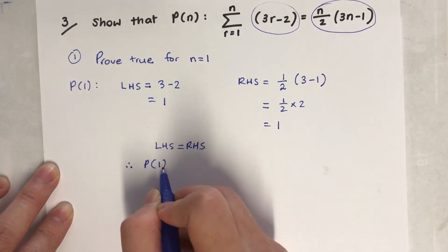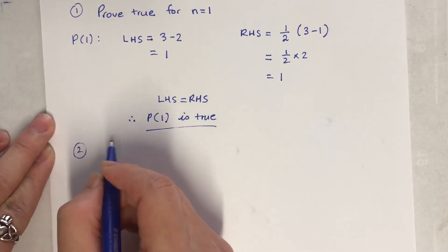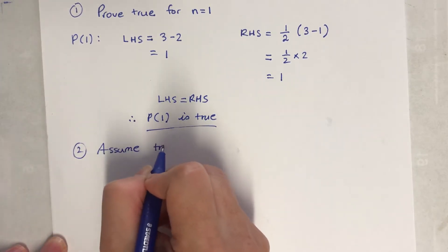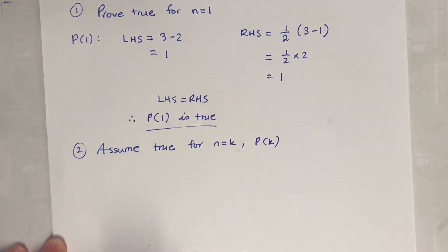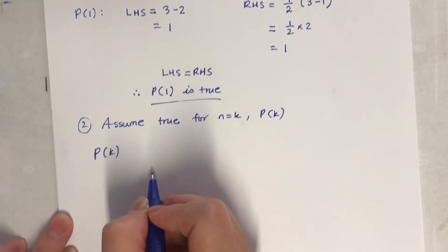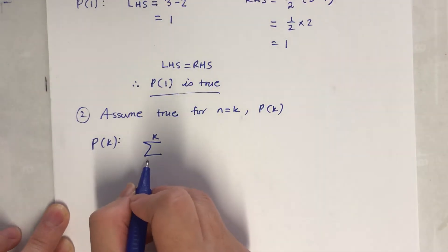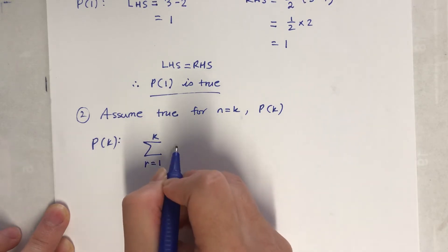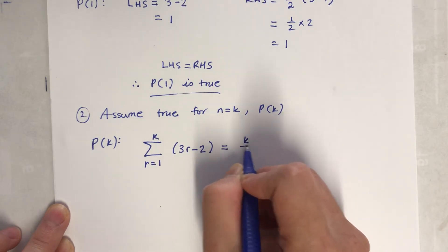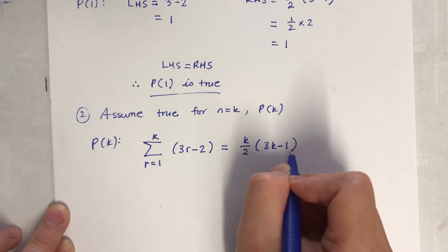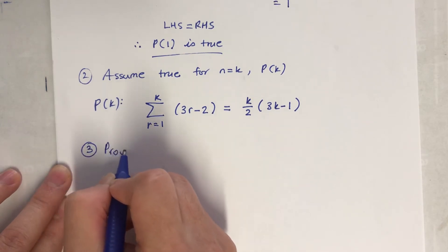So left hand side equals right hand side, therefore when n equals 1 it is true. Step 2 is the easy one: assume true for n equals k. So when n equals k, the sigma from r equals 1 to k of (3r minus 2) equals k(3k minus 1) over 2. That's my assumed formula.